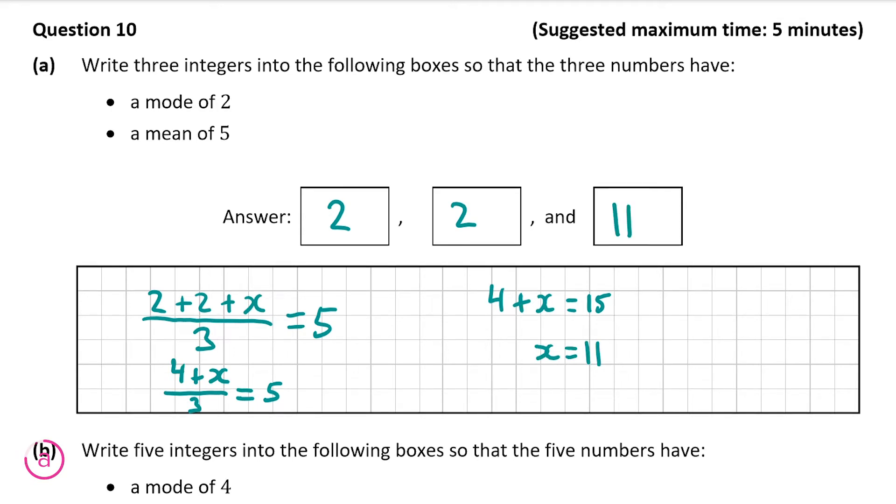So it's 2, 2 and 11. That's very straightforward there and it's a very basic question on finding a set with a specified mode and mean. So now let's move on to part B of the question which is slightly harder, but again if you had no issues with part A you should be relatively okay for part B.